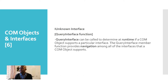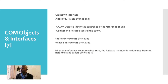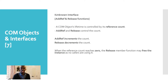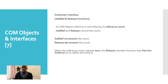The other two member functions of IUnknown are AddRef and Release. A COM object's lifetime is controlled by its reference count — AddRef increments the count and Release decrements the count. When the reference count reaches zero, the Release member function may free the instance as no callers are using it. We have to make sure we release those resources because we're not using the object — it would be wasteful to keep it there.